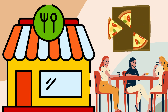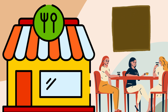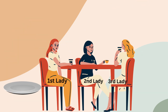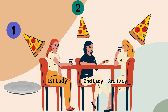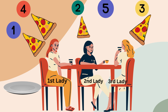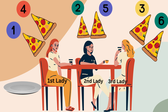Let's start division of six pizza slices between these three ladies. First slice to first lady. Second slice to second lady. Third slice to third lady. Fourth slice to first lady. Fifth slice to second lady and sixth slice to third lady. So all six pizza slices are distributed between them into two equal slices each. Now the tray is empty.